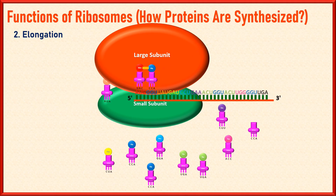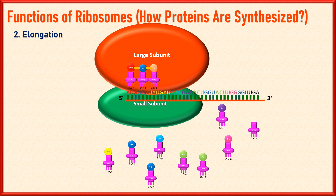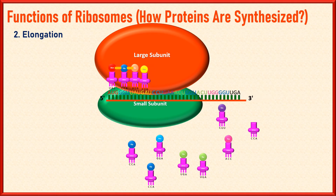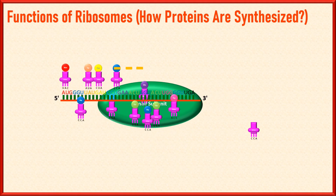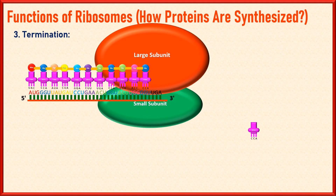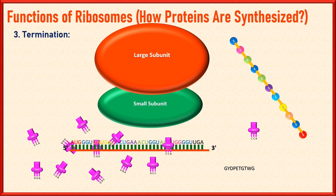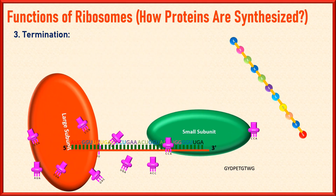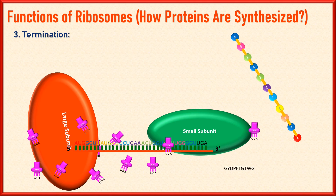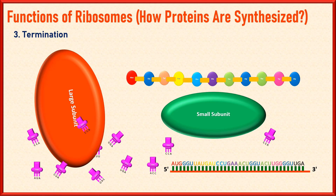The ribosome continues to move along the messenger RNA, reading each codon and adding the corresponding amino acid until it reaches a stop codon, which may be UAA, UAG, or UGA. As the stop codon approaches, it signals a protein releasing factor, which binds with the ribosome to release the newly formed protein and messenger RNA. The process of translation — protein synthesis — ends with termination. When the ribosome encounters a stop codon, a release factor binds to the ribosome, causing the newly synthesized polypeptide chain to be released. The ribosomal subunits dissociate from each other and the messenger RNA is released, which is ready to be translated again.